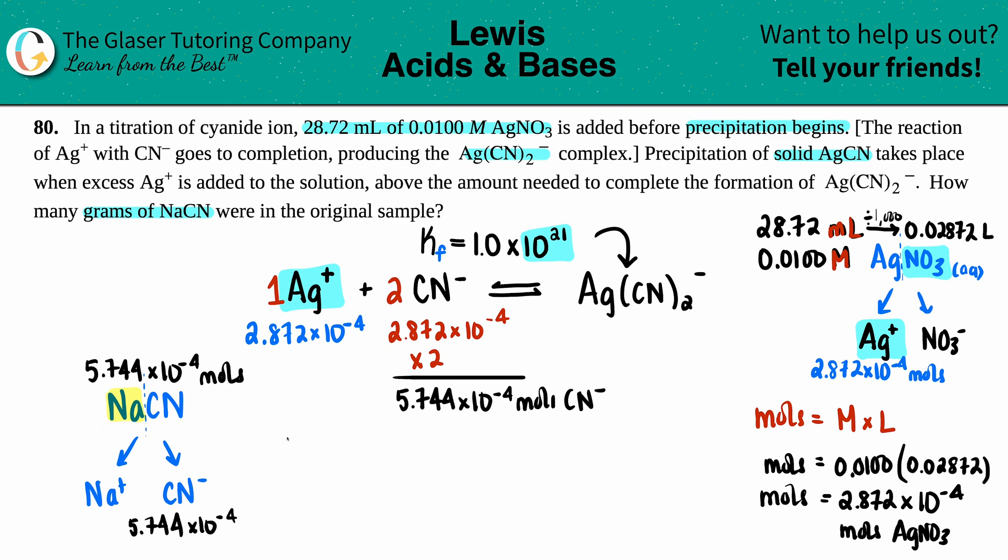And now I can just go from moles to grams. So we don't have to do dimensional analysis at this stage of the game. We can just do the easy conversion, right? Going from moles to grams of NaCN. Moles to grams, all we have to do is just times by the molar mass. So I got to look on the periodic table for what is the molar mass of NaCN. So let's see. NaCN, I got 22.99 plus 12.01 plus a nitrogen, 14.01. And I got 49.01. So let me take that number, times it by 5.744 times 10 to the negative fourth. And I guess three sig figs. So 0.0282. So 0.0282 grams of NaCN.